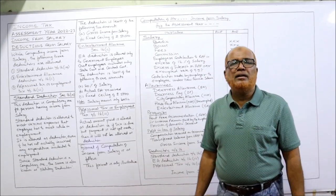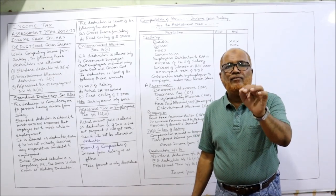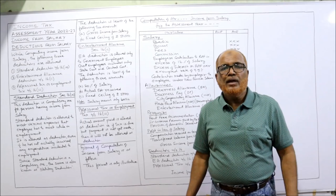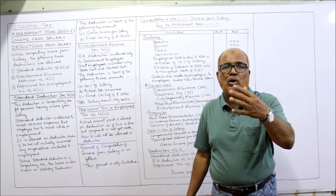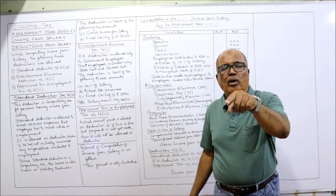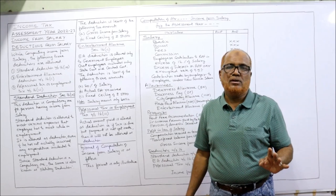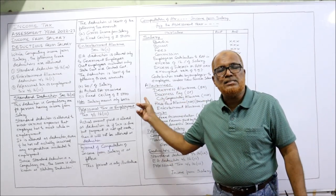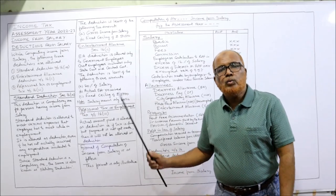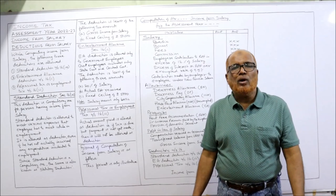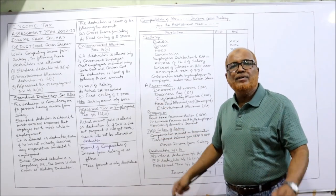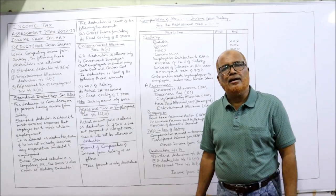The next deduction is entertainment allowance deduction. This EA deduction will be allowed only for government employees — meaning employees of the central government or state government. It does not include employees of statutory corporations, local authorities, or non-government employees. Entertainment allowance deduction is the least of the following three amounts: 20% of salary, actual EA received, or a fixed ceiling amount of 5,000. Among these three, whichever is least will be allowed as deduction. Here, salary means only basic — no allowances, nothing else.